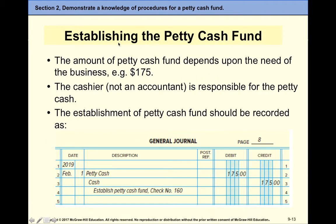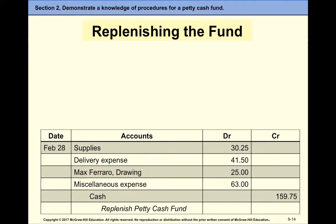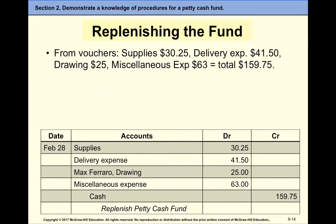First of all, we need to establish the petty cash fund. The company decides how much funds they want — let's say $175 per month. At the beginning of the month, we're going to write a check to ourselves; we withdraw cash from the checking account. So we debit Petty Cash — it's a new account, it's an asset — and we credit Cash.